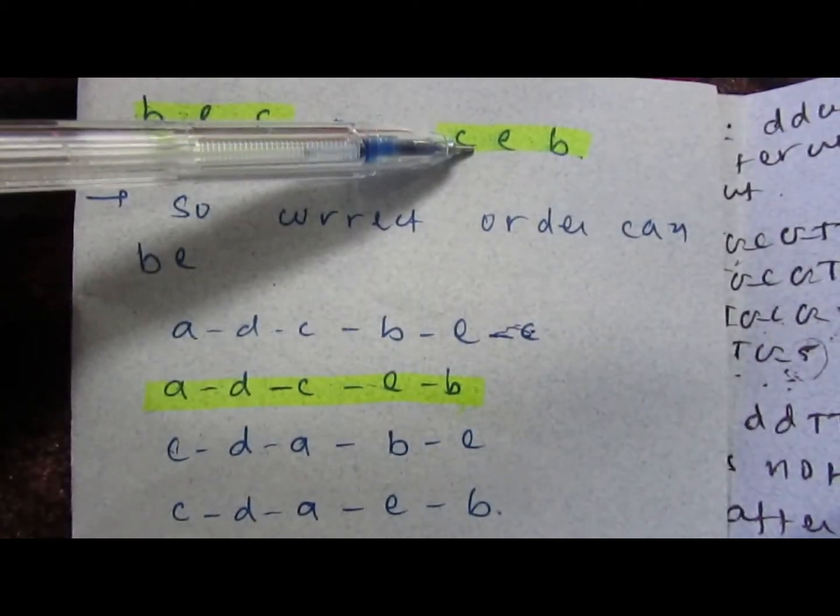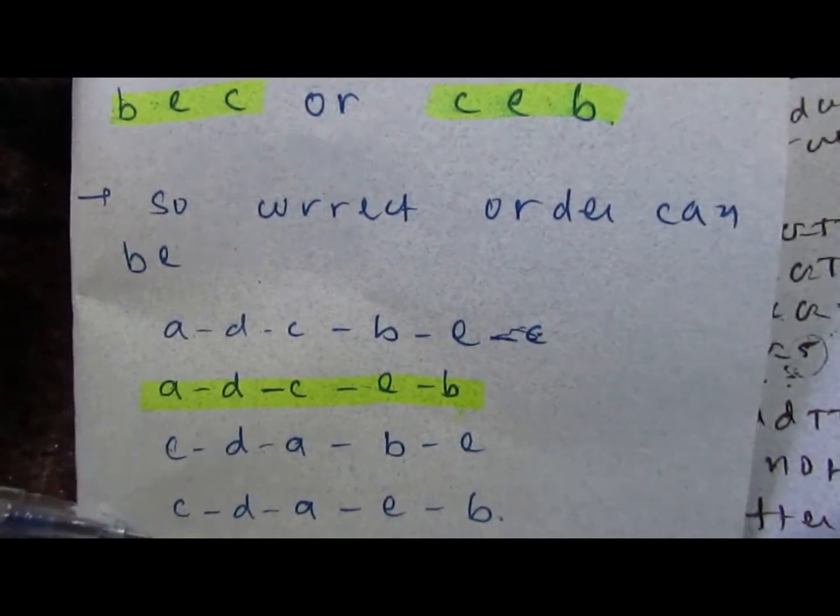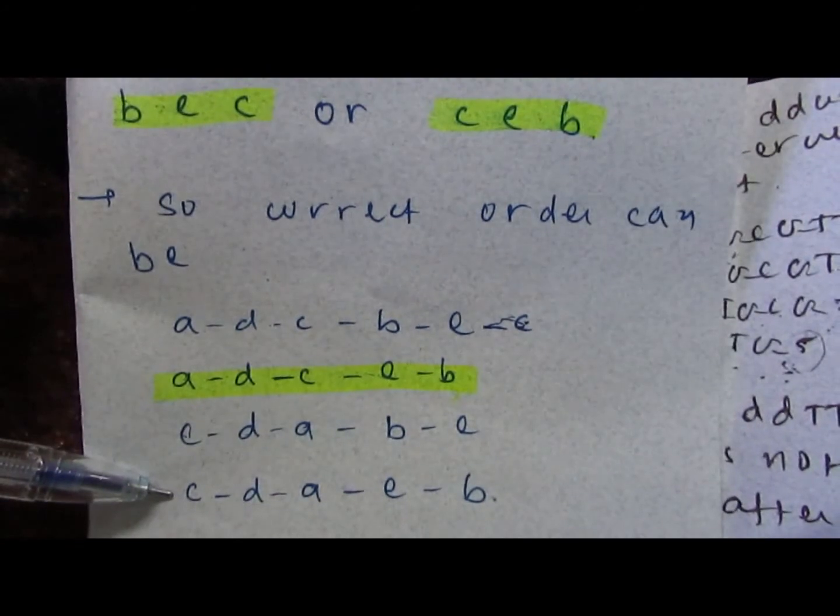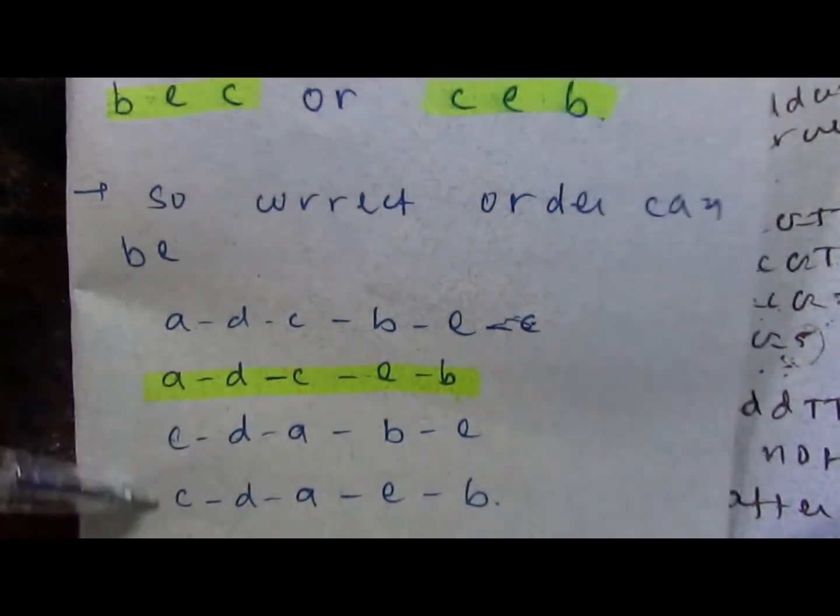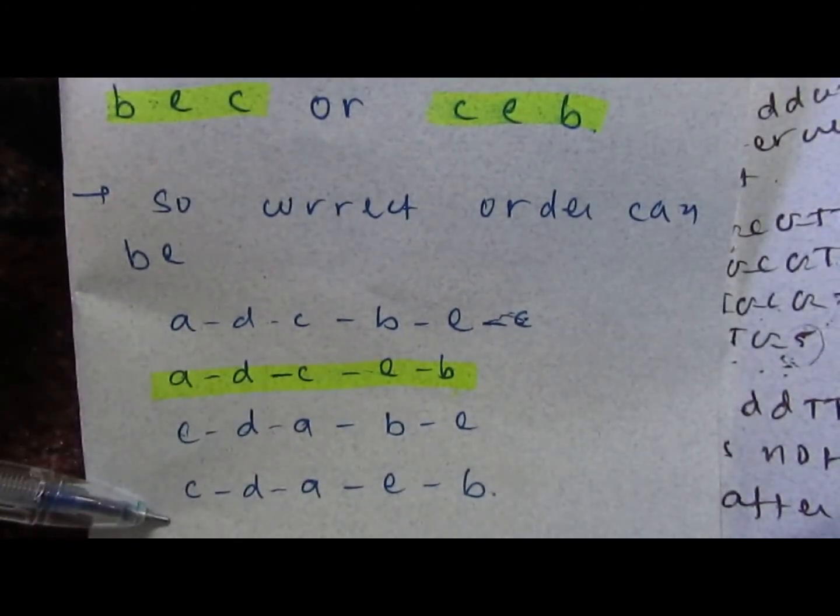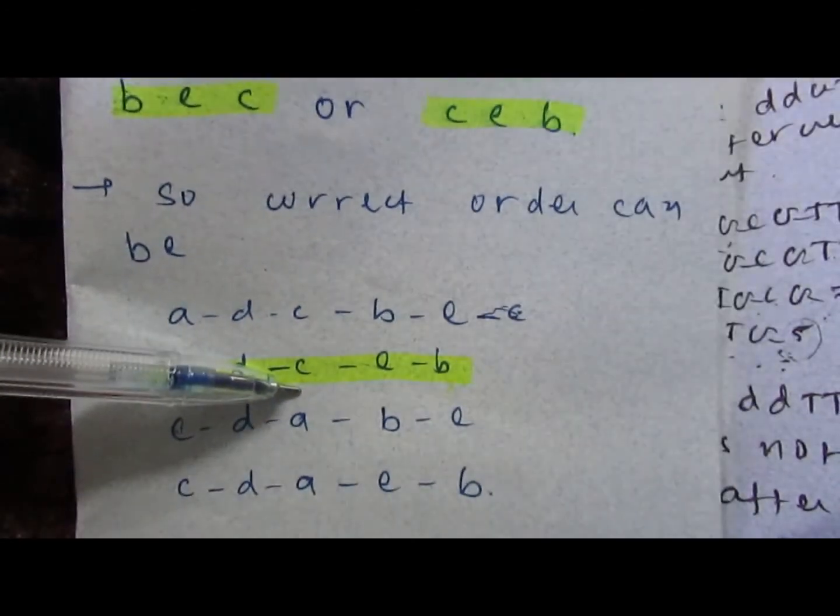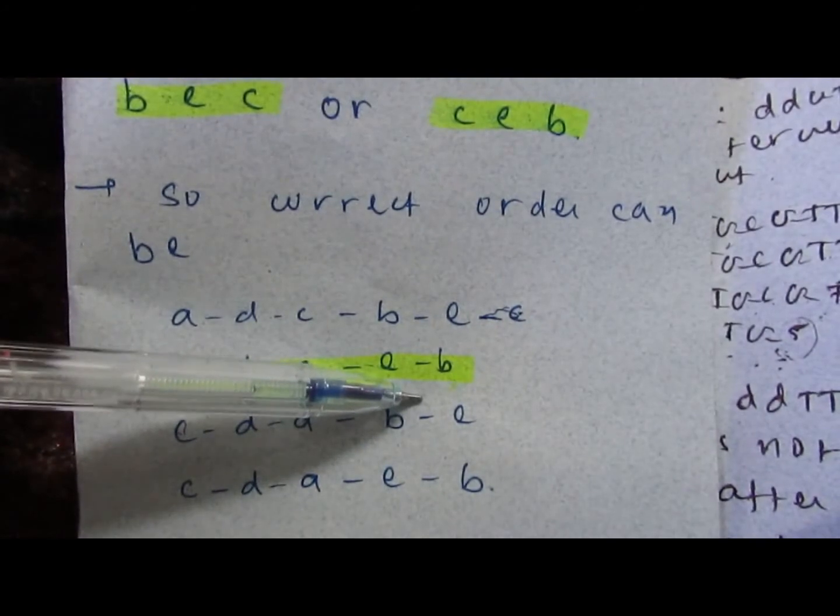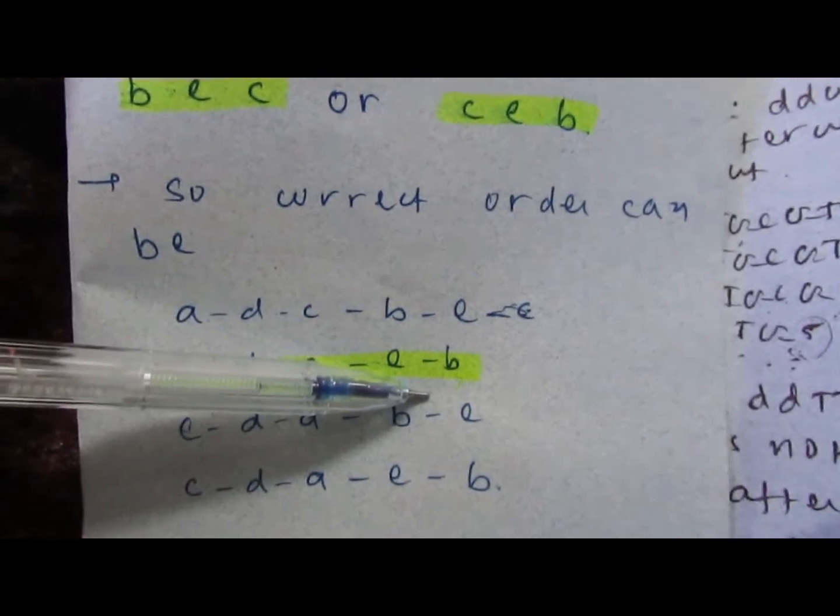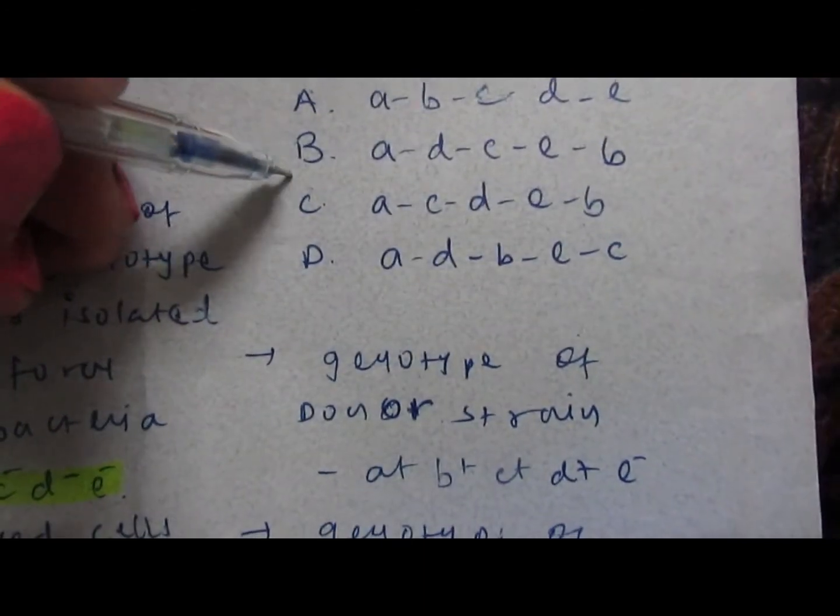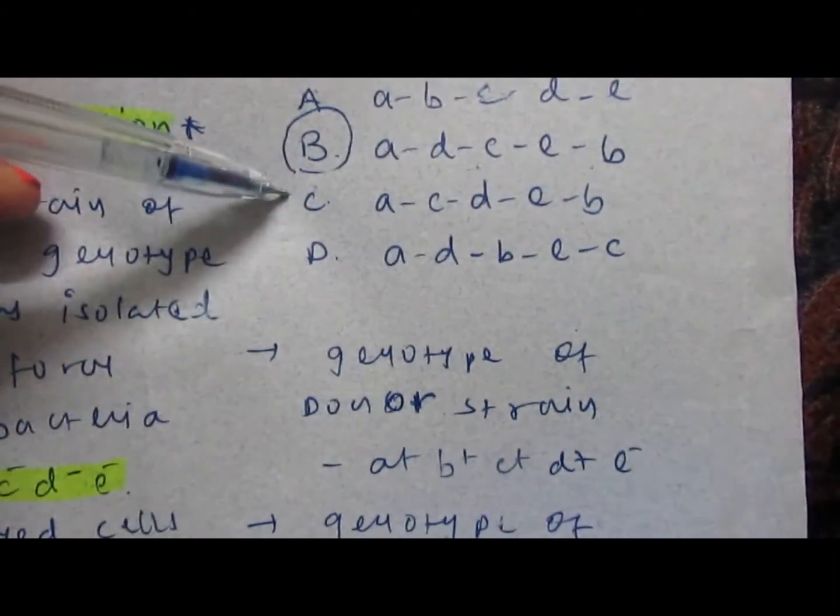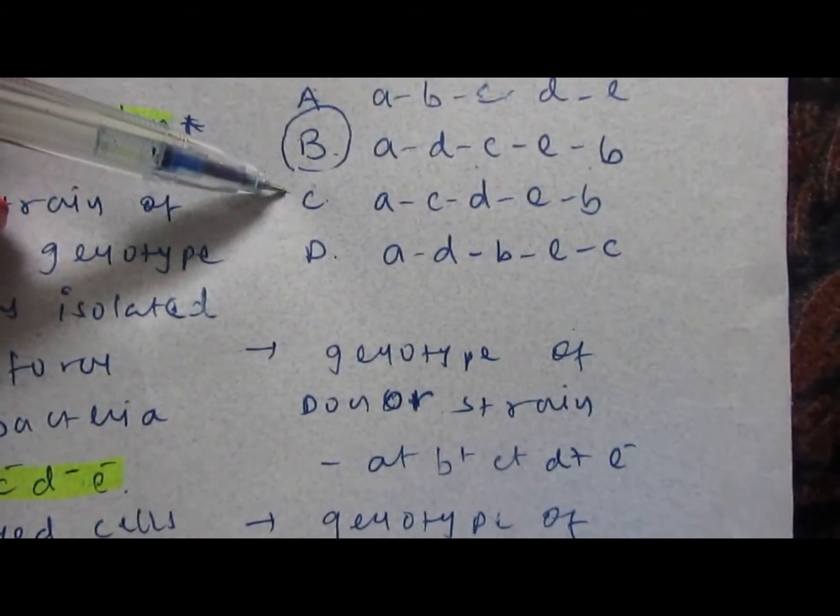If we club c-d-a and c-e-b together, then there are again two possibilities of correct gene order. The gene order option a-d-c-e-b matches our answer options, so answer option B, that is a-d-c-e-b, is the correct gene order of this problem.